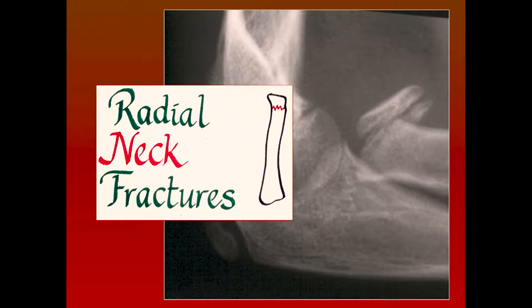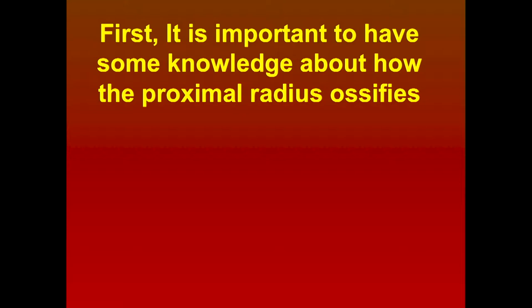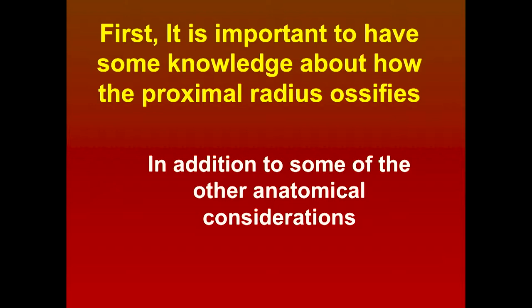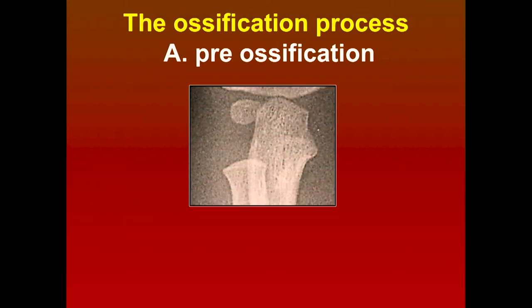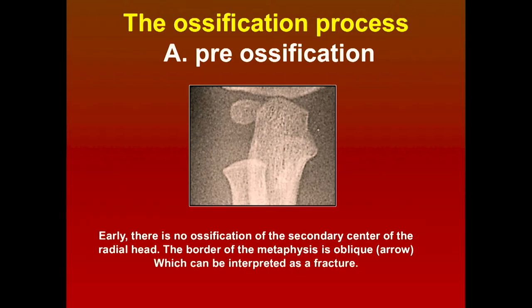Very rarely do we see head fractures, and I'll show you some of the problems that occur when we have head fractures. You really have to have a little knowledge about how the proximal radius ossifies and other anatomical considerations. In the pre-ossification phase, the metaphysis is kind of angulated a little bit, and I've seen situations where it was interpreted as a fracture. The border of the metaphysis is kind of oblique, and sometimes they'll think it's a torus fracture, so you have to consider that as a normal variation.